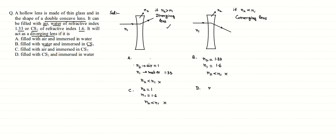So in option D, it is filled with CS2, meaning n2 = 1.6, and it is immersed in water, so n1 = 1.33. Here we see that n2 is greater than n1, so this is going to act as a diverging lens. Therefore, the correct option is D.